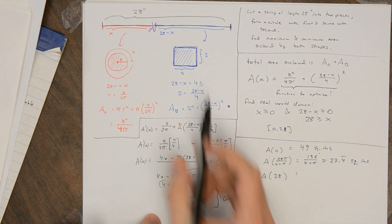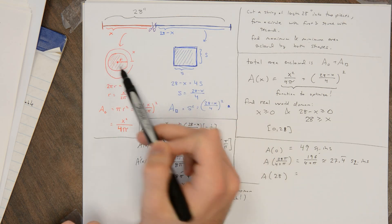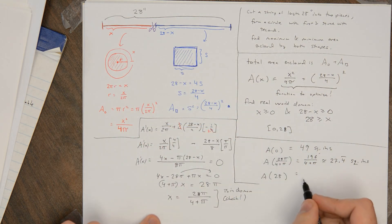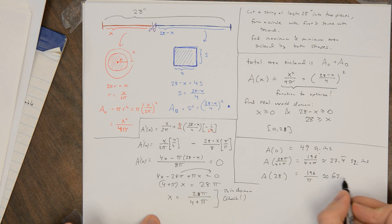And then finally, if you use all of this string to make the circle, so x is 28, then you're going to get 196/π, which is about 62.38 repeating square inches.